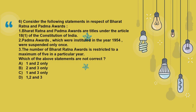Statement 2 is also incorrect — Padma Awards were instituted in 1954, but the government suspended the practice of granting them for two years in 1977, and it was again suspended during mid-1992. Statement 3 is also incorrect — a maximum of 3 people can be awarded the Bharat Ratna. So, which of the above statements are not correct? The correct option is Option D, as all three statements are incorrect.